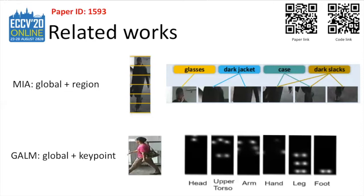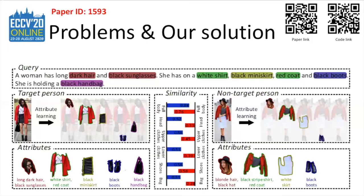Specifically, MIA exploits region information by manually dividing the input image into horizontal strips and extracting noun phrases from the natural language description. GALM leverages keypoint information from human pose estimation as an attention mechanism to assist feature learning, together with a noun phrase extractor on input text. Relevant studies point out the critical role of discriminative representations, especially of local fragments in both image and text, but how to effectively couple them stays an open question.